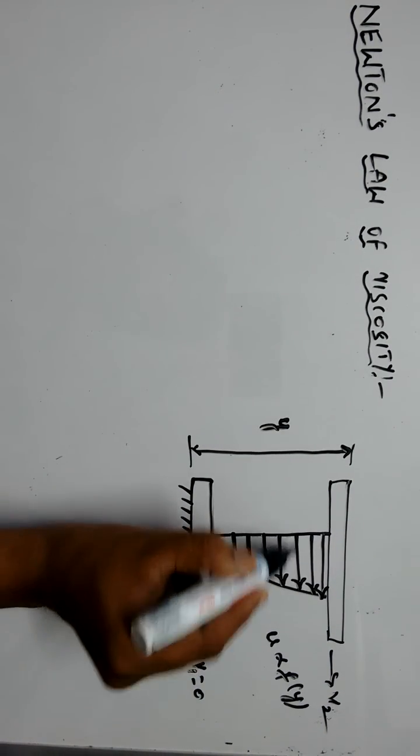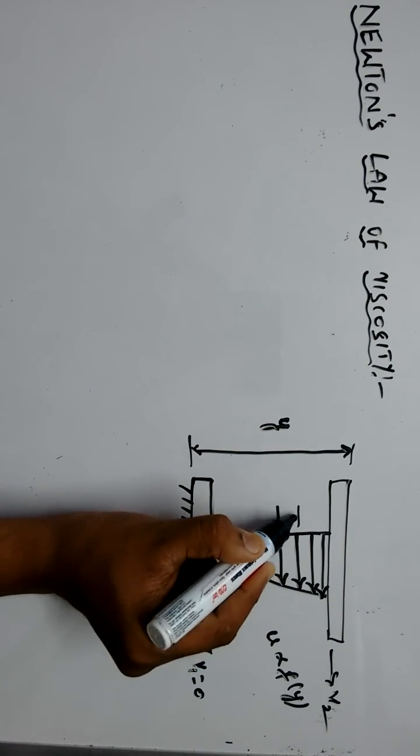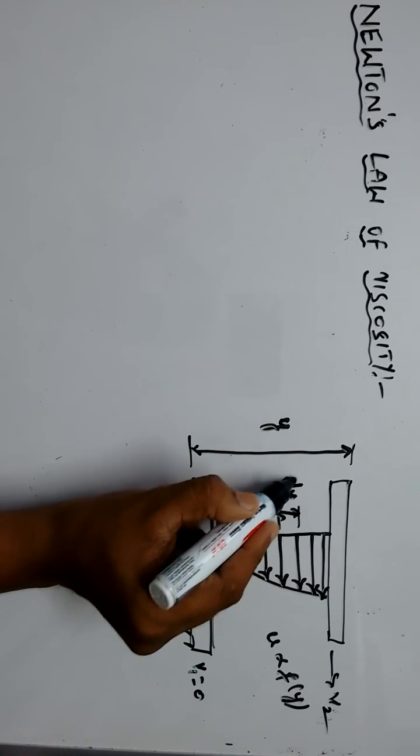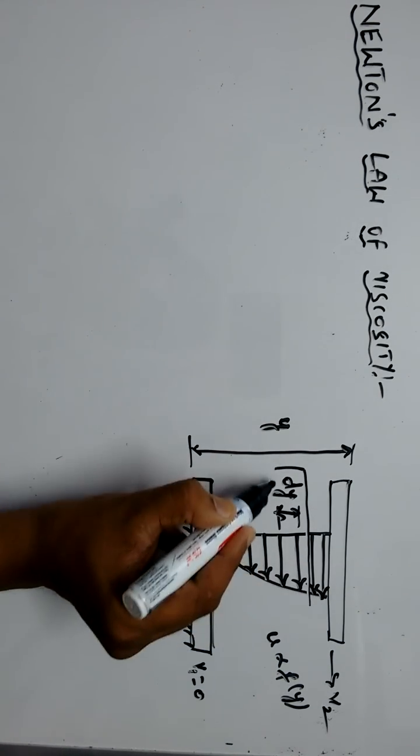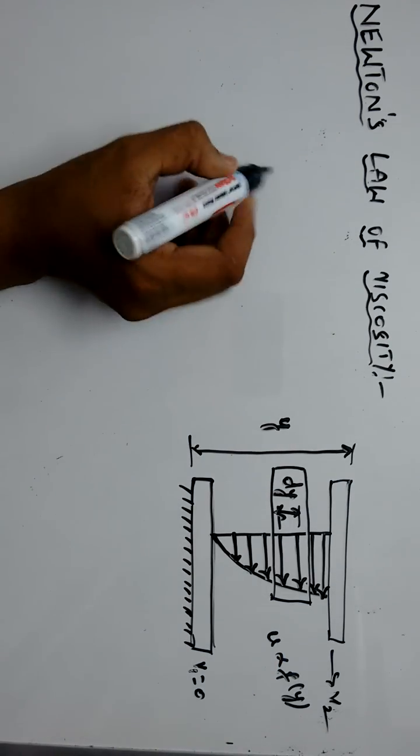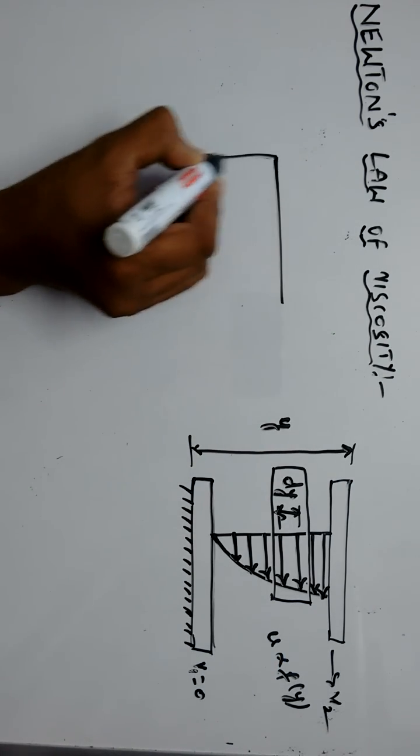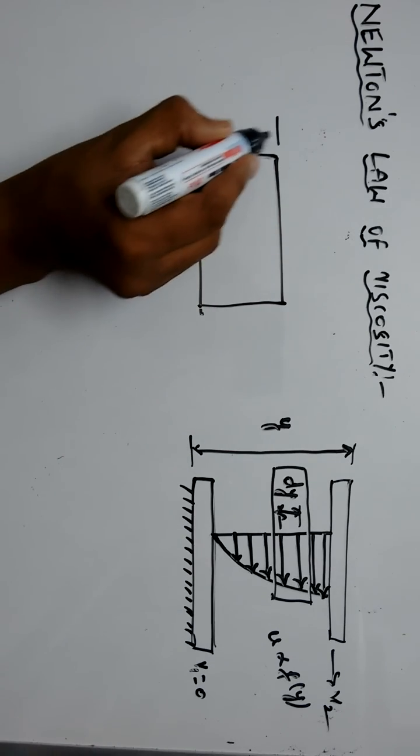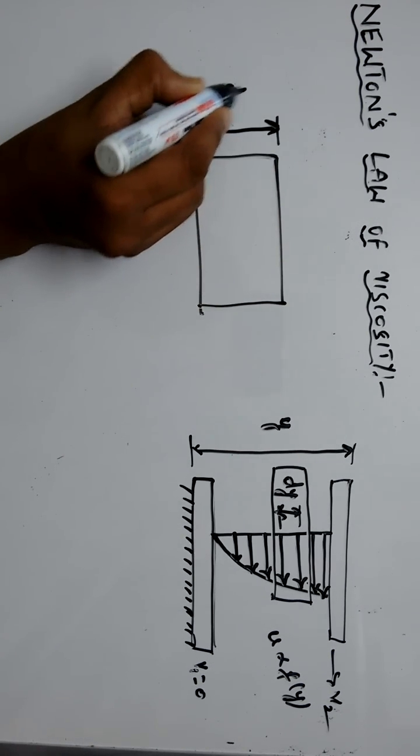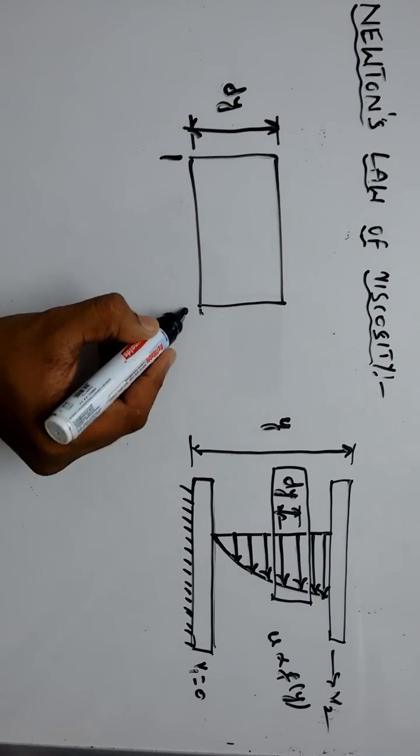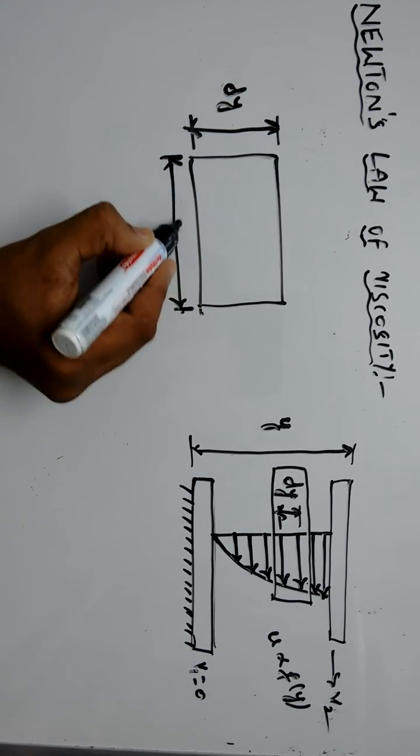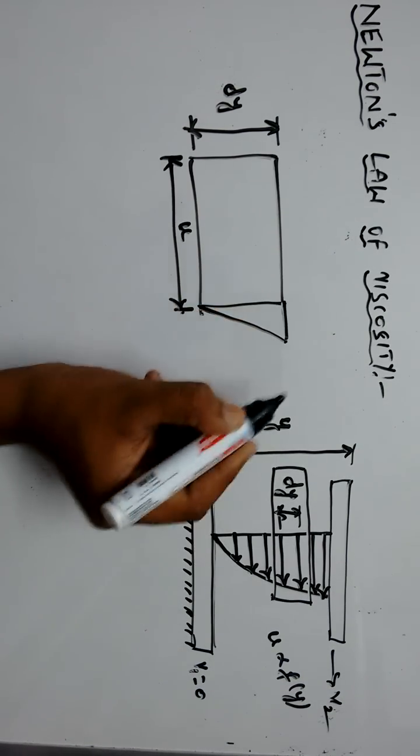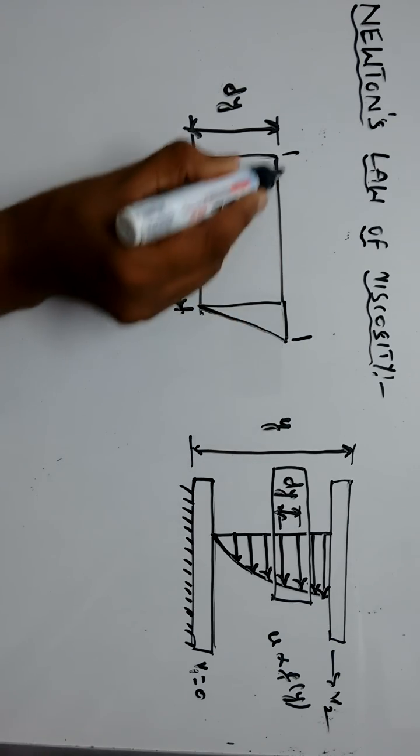Let us consider two individual fluid layers which are separated by a distance of dy. The velocity of the bottom layer of the fluid element is u and the velocity of the top layer is u plus du.